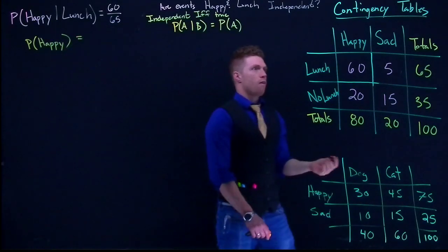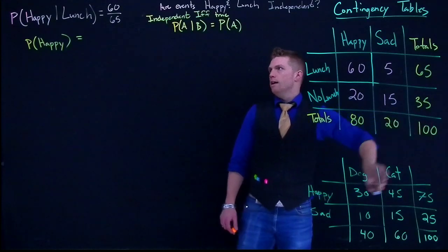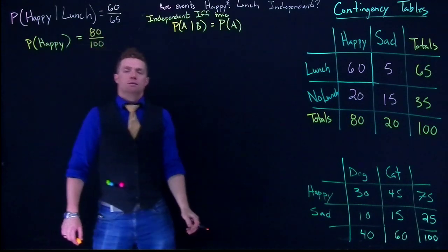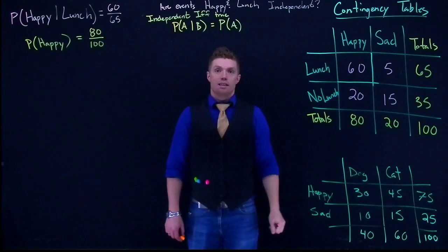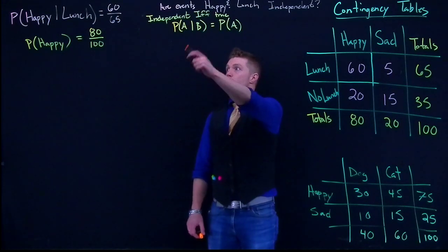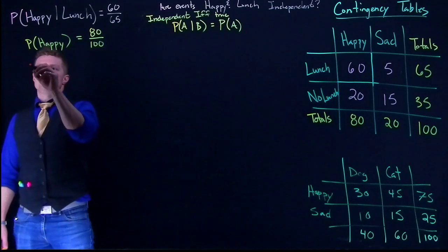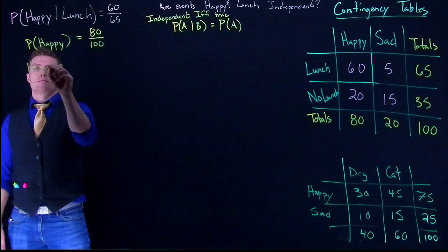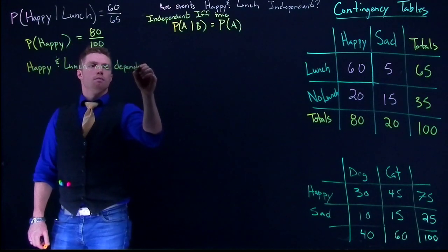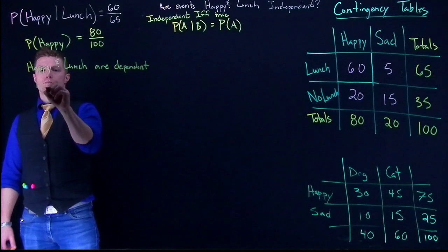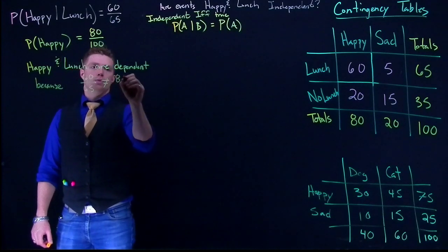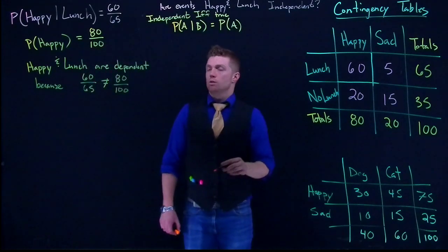That's pretty easy to check. The probability of being happy is 80 divided by 100. Are those two values exactly the same? The answer is no. You can verify with a calculator, but those probabilities are not equal. Therefore, happy and lunch are dependent — because 60/65 is not equal to 80/100.